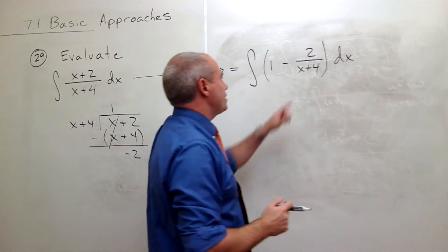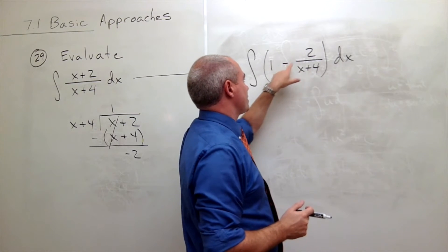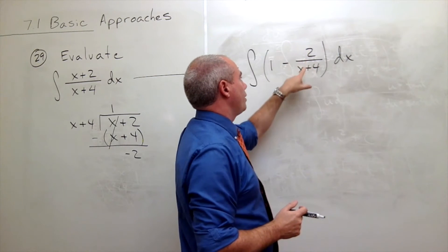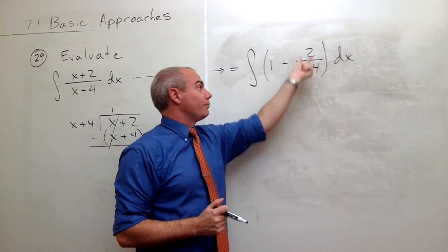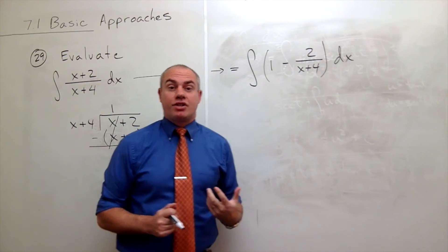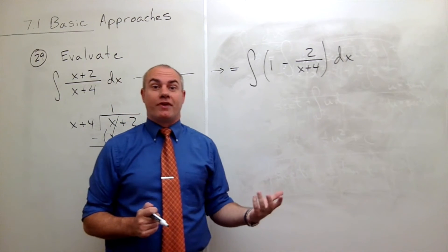Alright, but this is quite simple. The minus 2 doesn't matter so much here. I have a 1 over x plus 4. In other words, the derivative of the bottom is the top. So that's just an ln of absolute value of the bottom.